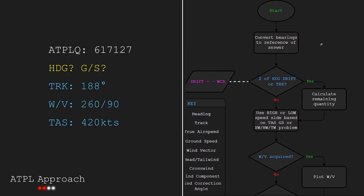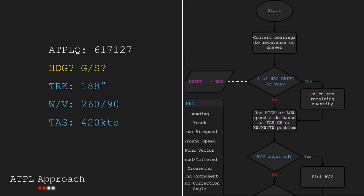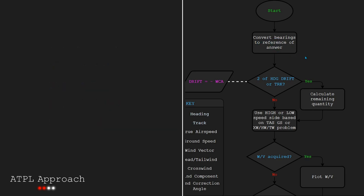So we start at the top here and then get to the first process which tells us to convert bearings to the reference of our answer. What that means is if our multiple choice answers were in terms of magnetic north and we had things given to us in terms of true north, we should then convert what we are given to magnetic north or else we're going to forget or even be tricked by the answers. I will go over this certain trick later on in the course.